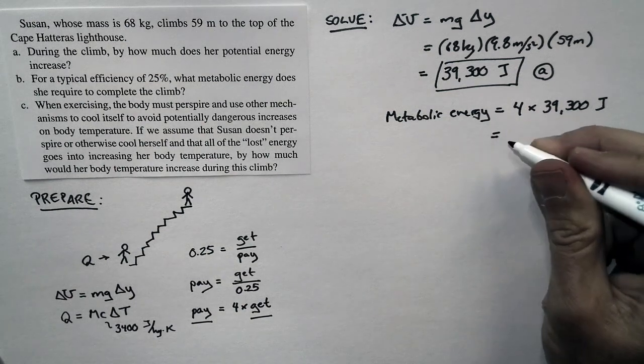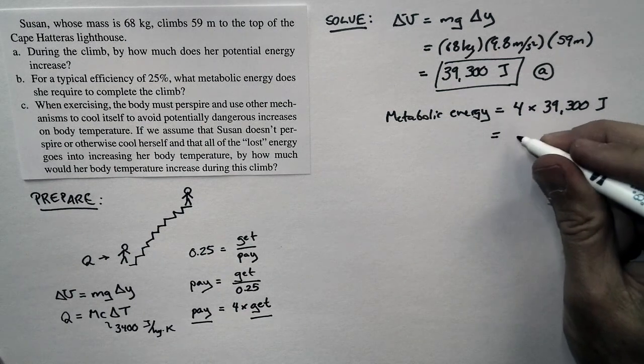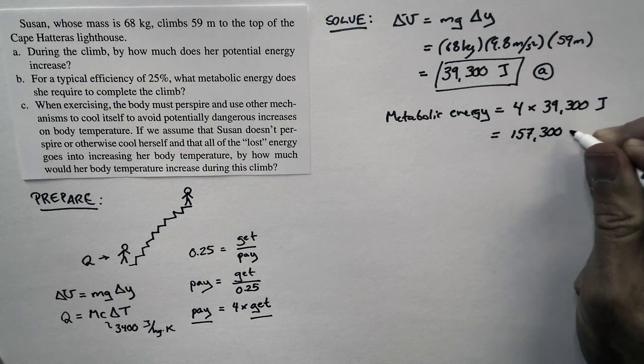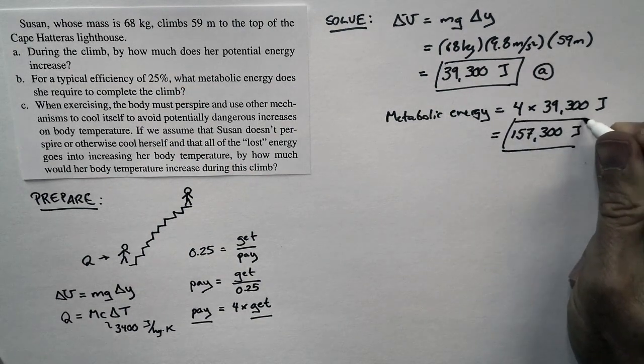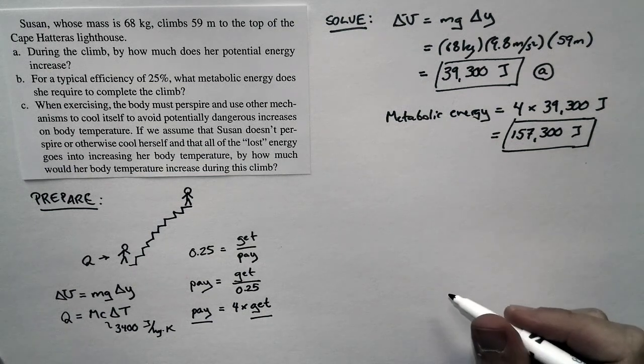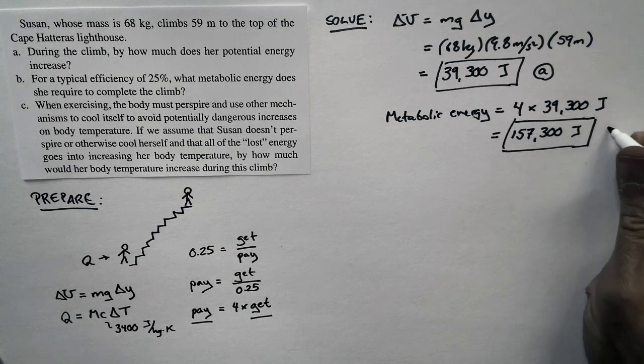So the metabolic energy that her body uses is 157,300 joules. And again, we've kept extra significant figures because it's an intermediate stage in our calculation. That's the answer to part B.